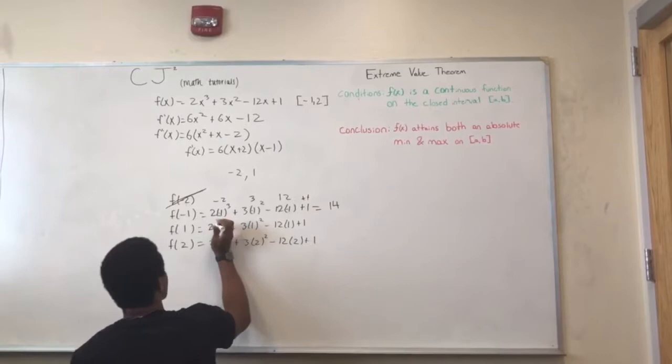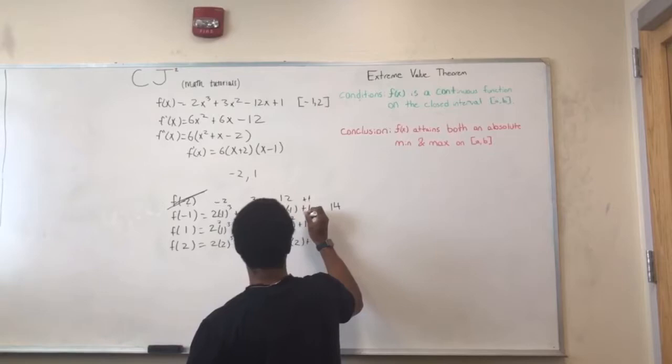And for F of 1, you'll get 2, 3, negative 12, plus 1, and that will be negative 7.